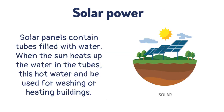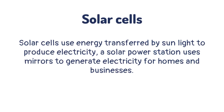Solar panels contain tubes filled with water. When the sun heats up the water in the tubes, this hot water can be used for washing or heating buildings. Solar cells use energy transferred by sunlight to produce electricity. A solar power station uses mirrors to generate electricity for homes and businesses.